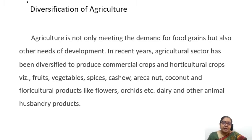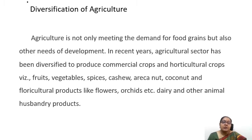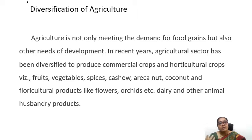The diversification of agriculture means it is not only meeting the demand for food grains but also other needs of development. In recent years, the agricultural sector has been diversified to produce commercial crops and horticultural crops — that is, fruits, vegetables, spices, cashew, areca nut, coconut. We also have floricultural products like flowers and orchids, as well as dairy and other animal husbandry products. The farmer is no longer just dependent on agriculture but has diversified into various allied activities.